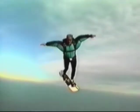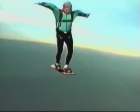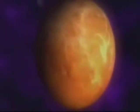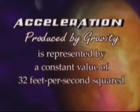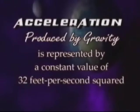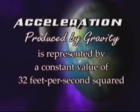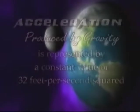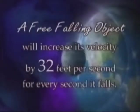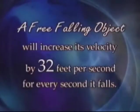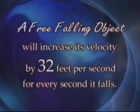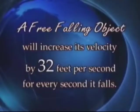The Earth produces a form of acceleration known as gravity, which affects everyone and everything on the ground and in the air. Acceleration produced by gravity is represented by a constant value of 32 feet per second squared. As an example, a free-falling object will increase its velocity by 32 feet per second for every second it falls.